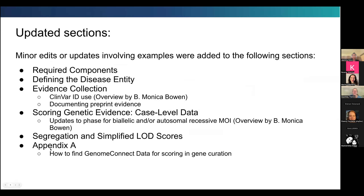The specific sections we updated — and I'll go through step by step — are the initial required components, where we added detail in the defining the disease entity section, evidence collection, scoring genetic evidence at the case level data, segregation and simplified LOD scores, and a new part of Appendix A reviewing how to use Genome Connect data for gene curations.